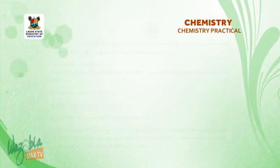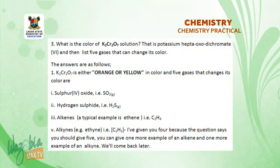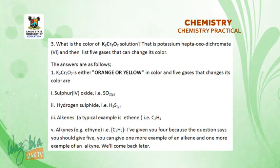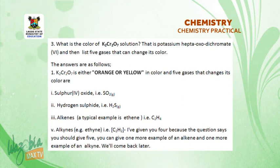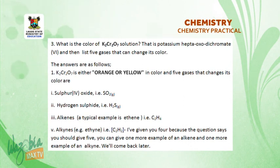Let's take the third question. What is the color of K₂Cr₂O₇ — that is potassium heptaoxodichromate(VI) — and list five gases that can change its color. The answer: K₂Cr₂O₇ is either orange or yellow in color.